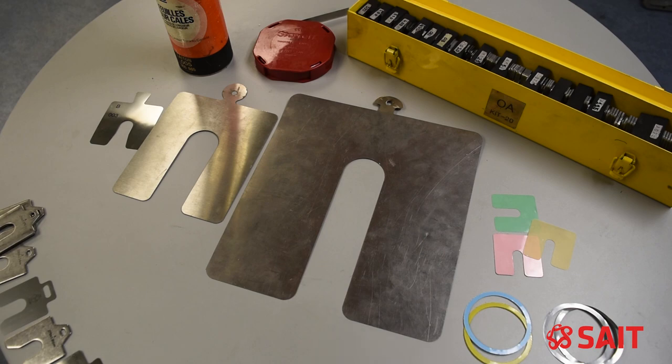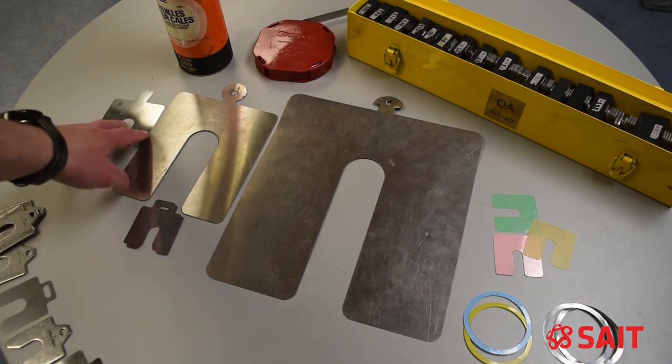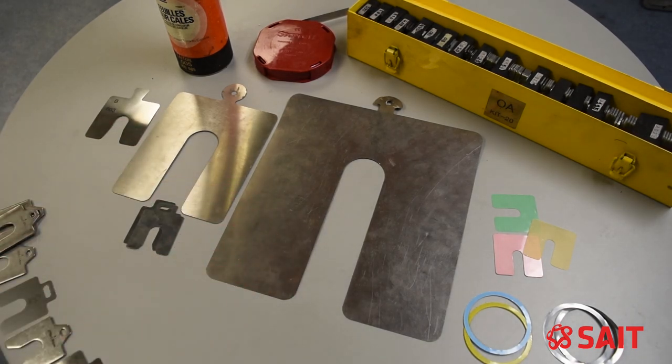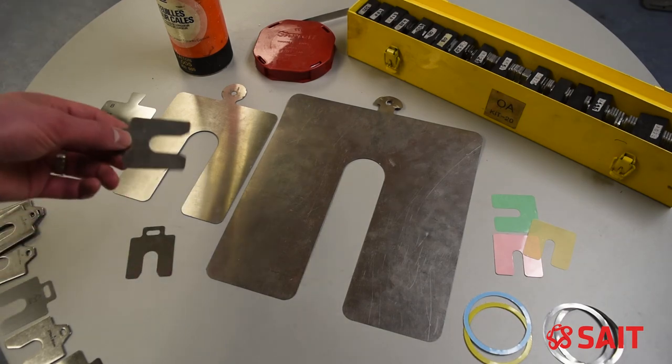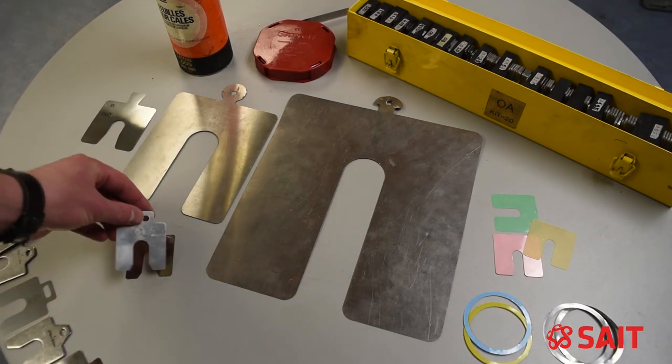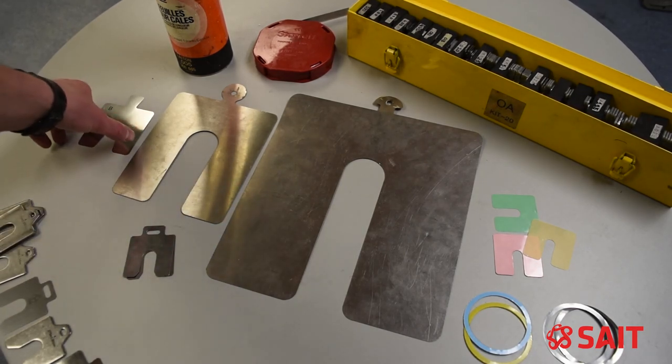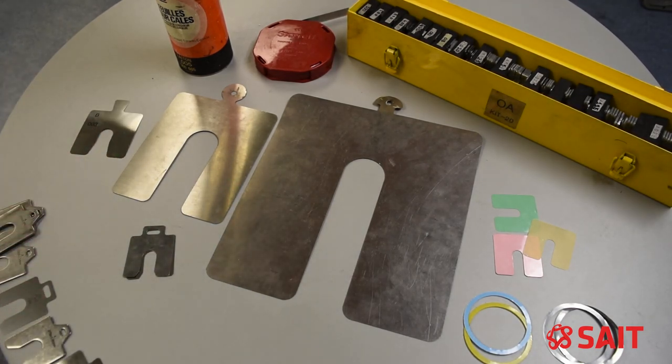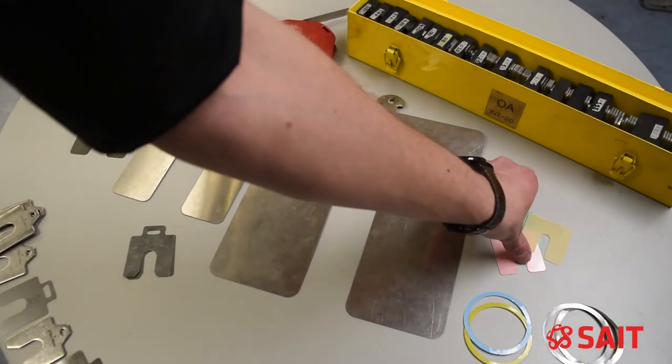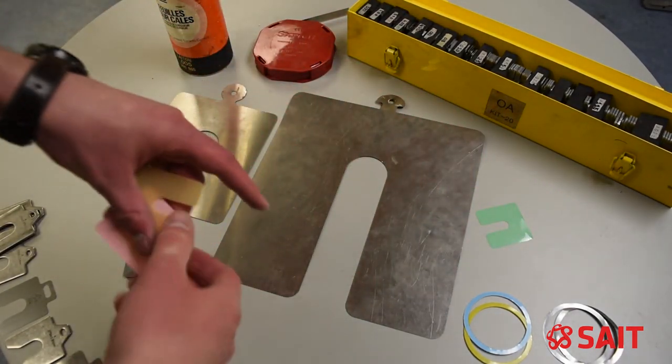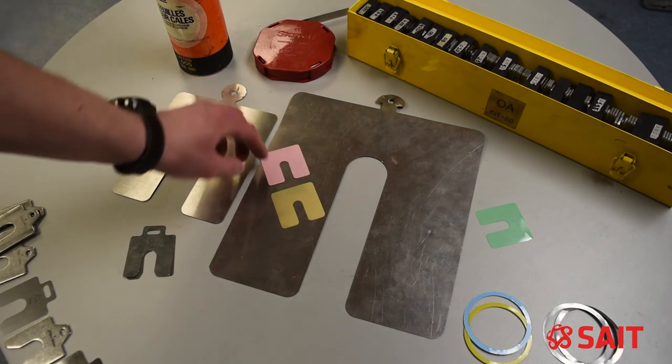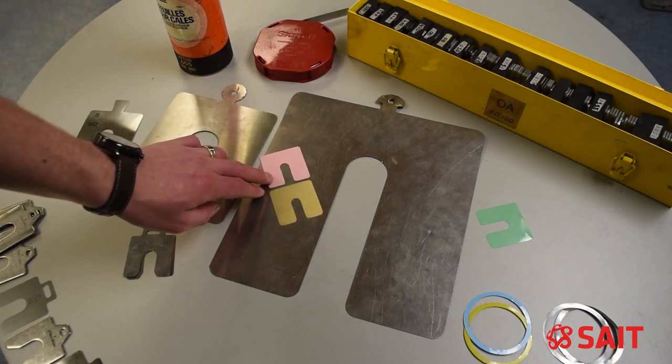We have here some examples of the sizes that are available. We have some A style shims, B, C and D. The A shims as an example have a dimension 2x2 roughly, 3x3 for B. They are also available in plastic shims. We have plastic or polymer shims, they are color coded to their thickness.